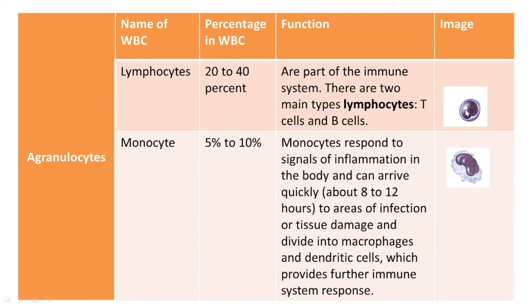The appearance of lymphocyte: it is an agranulocyte, meaning there are no granules in the cytoplasm, and its nucleus is almost round. We can see this cell with a cytoplasmic margin around the nucleus. Then monocyte — monocyte accounts for 5 to 10 percent of total WBC. Its role: when inflammation happens in our body, monocytes arrive at that spot within 8 to 12 hours and convert into a macrophage or a dendritic cell, eliciting an immune response and destroying the affected or damaged tissue.